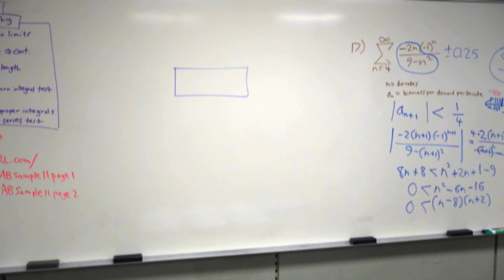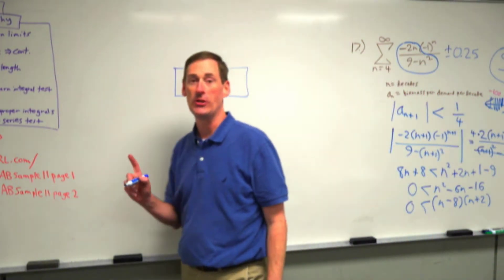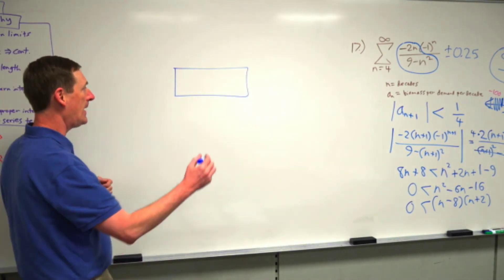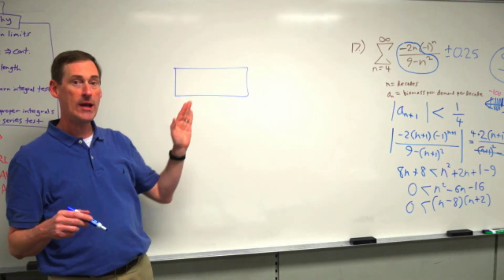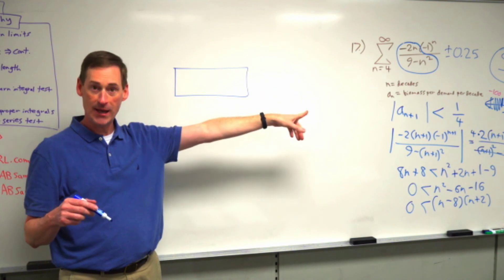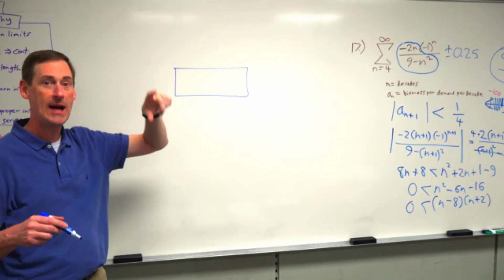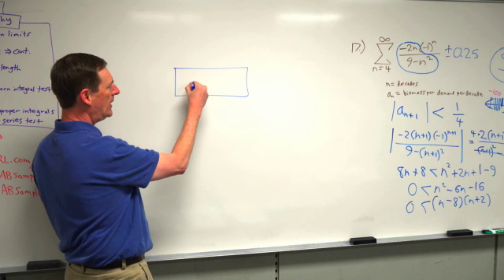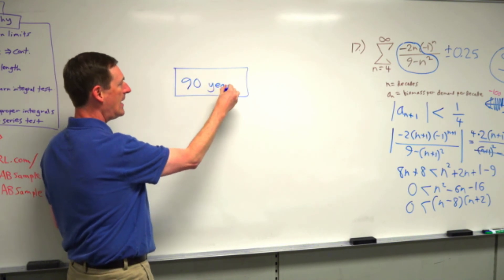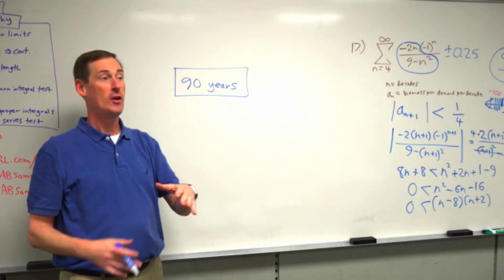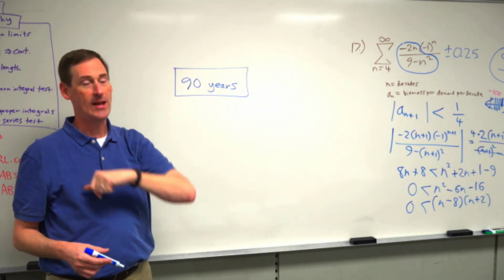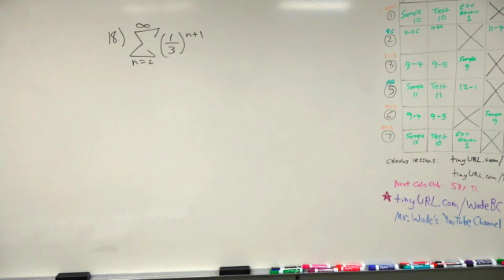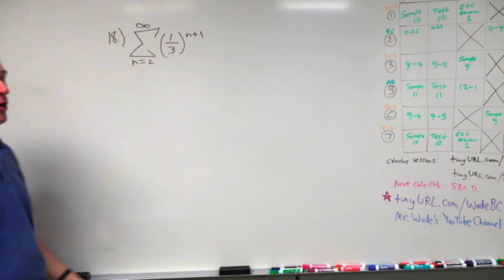Nine means we go to n equals nine — nine decades. The answer is 90 years. After 90 years the red spruce tree is basically as tall as it's going to get. And in fact that's true — after 90 years the red spruce tree is pretty much maxed out.